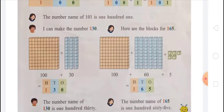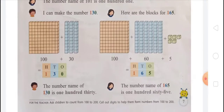I can make the number 130. For making 130, there should be 1 big block made from 100 small blocks, plus 3 blocks of tens — that means 30. So 100 plus 30 equals 130. On the ones place there is 0, on the tens place there is 3, and on the hundreds place there is 1.